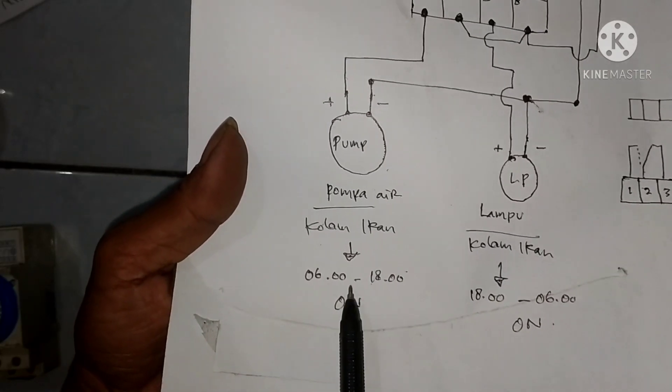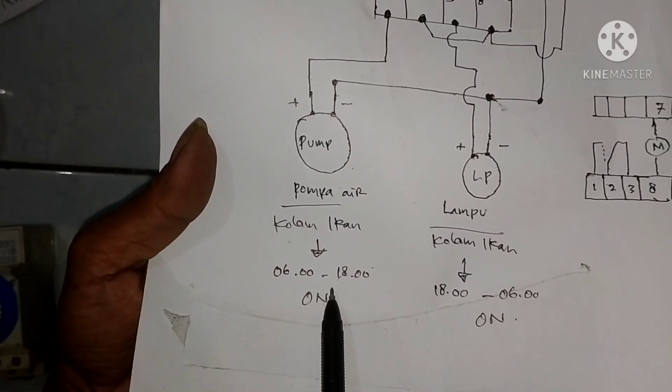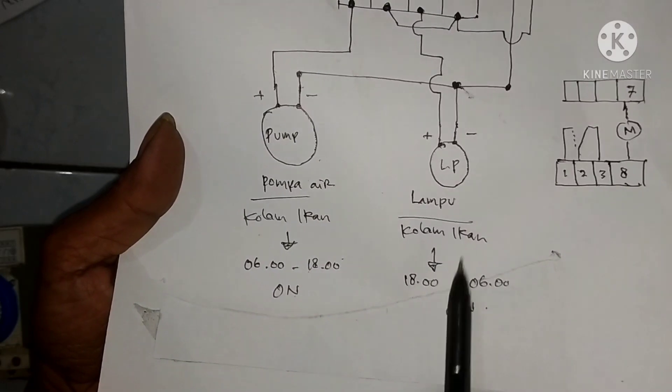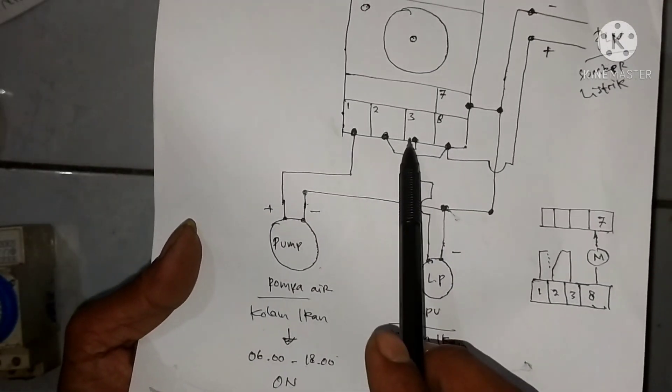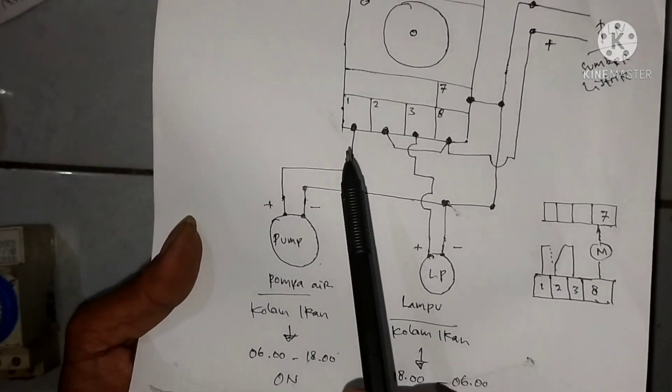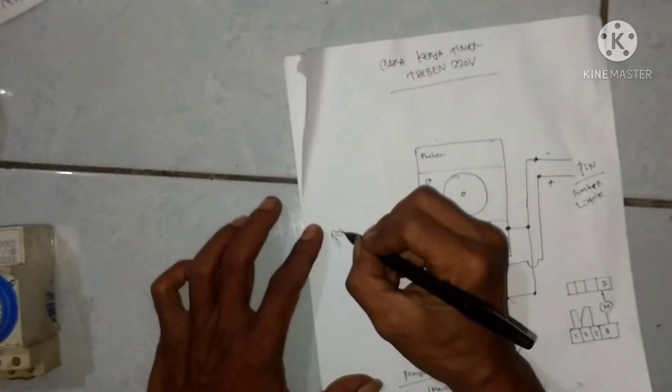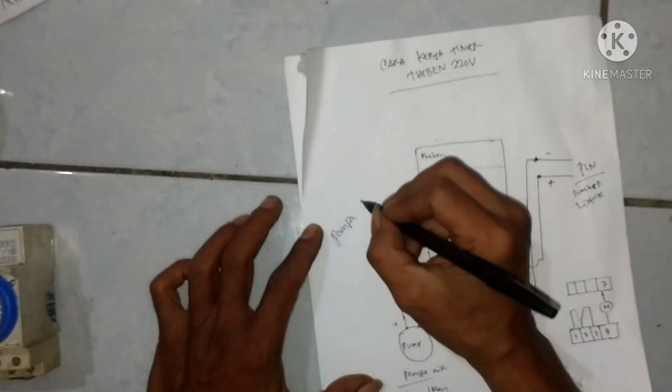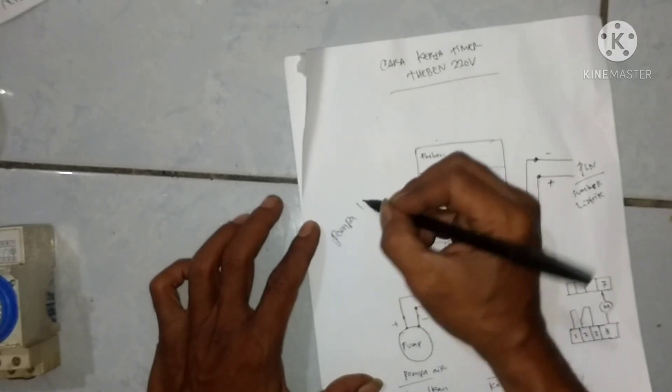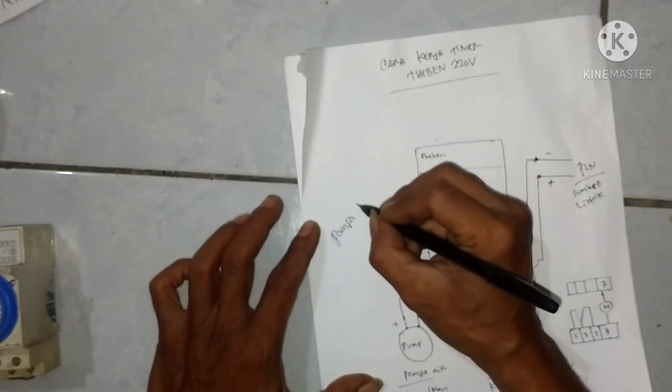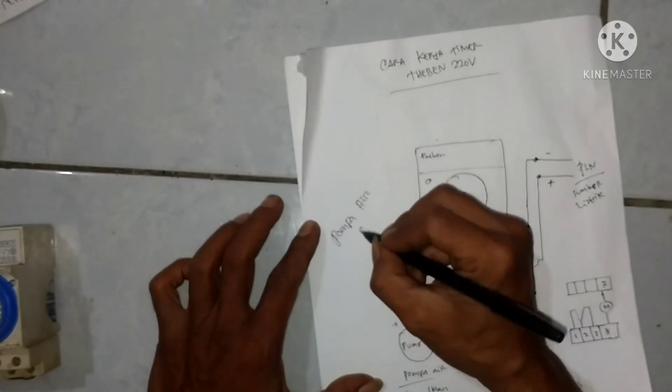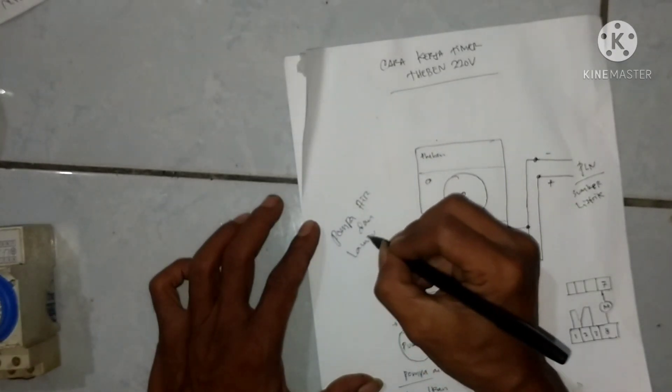Ini juga bisa diaplikasikan ke, nggak ke seperti ini aja ya, bisa juga ke saklar lampu teras rumah bagi yang suka berpergian. Kan enak tuh karena rumahnya nggak usah kita nyalakan, jadi pas kita ada di luar aman, lampu kita bisa nyala sendiri atau mati sendiri dengan waktu yang bisa ditentukan sama kita sendiri.